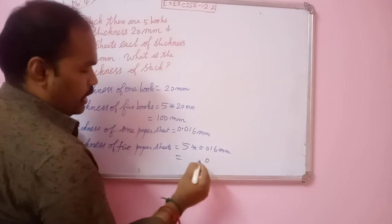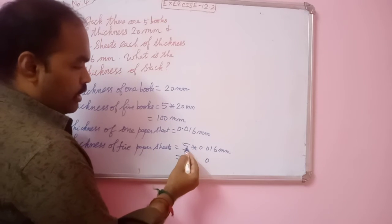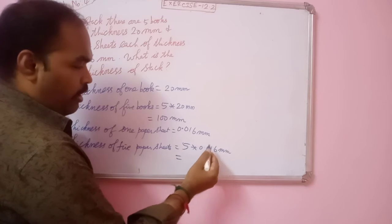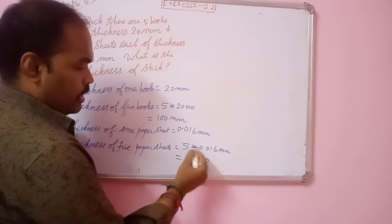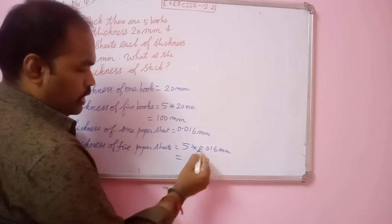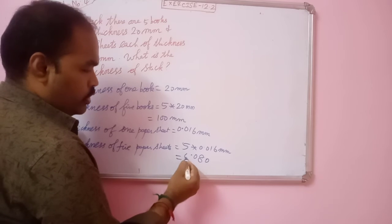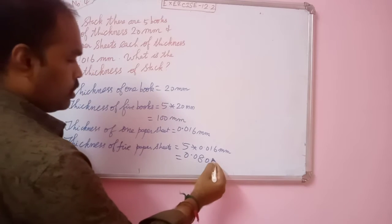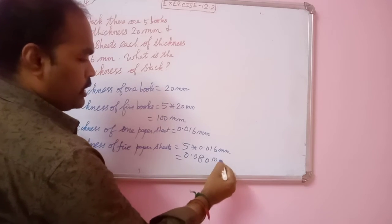5 into 6, 30. Balance 3. 5 into 1, 5. 5 plus 3, 8. 5 into 0, 0. Here, decimal. 5 into 0, 0. So, 0.080 mm. The unit is safe.